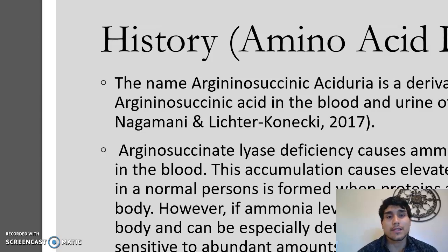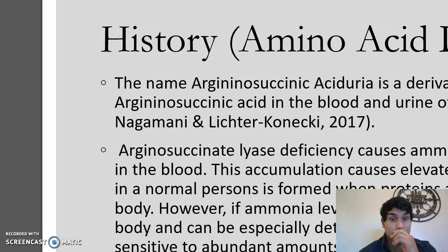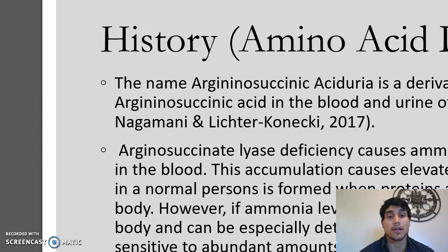Basically, how it works is it causes ammonia in the body to begin to accumulate in the blood. This accumulation will cause elevated levels of ammonia, which in a normal person is formed when proteins are broken down in the body. However, if ammonia levels become very high, it can be very toxic to the body and especially to the nervous system, as it is sensitive to abundant amounts of ammonia. A diagnosis would be given when a patient has an elevated plasma ammonia concentration and also an elevated plasma citrulline concentration.